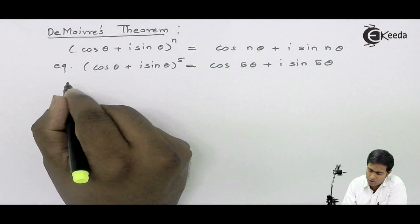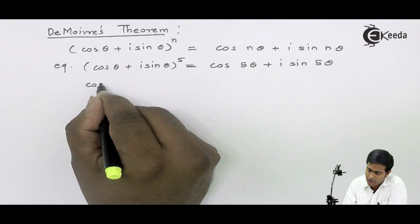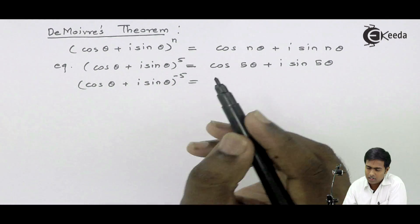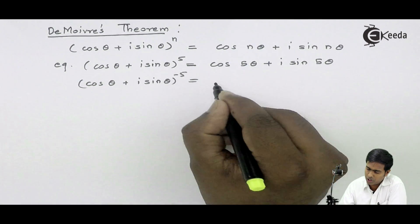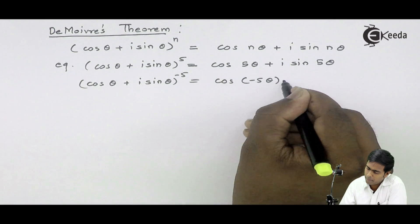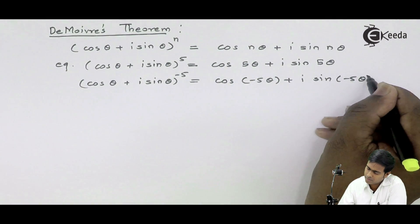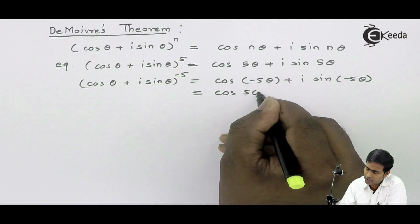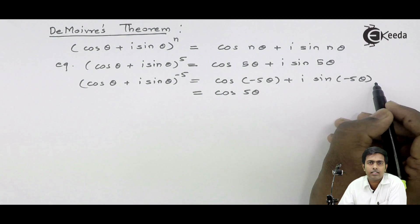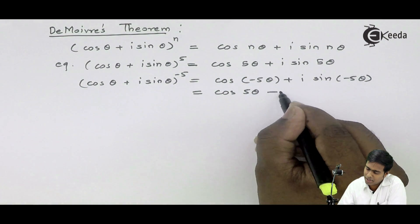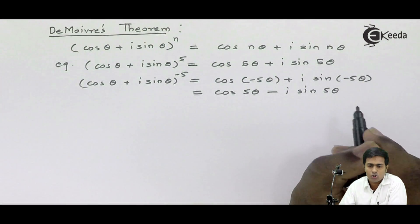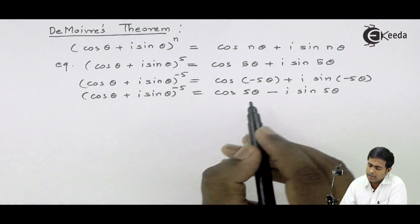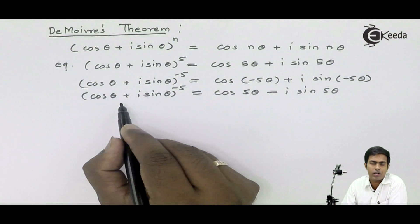Suppose it is (cos θ + i sin θ) raised to -5. Then what will happen? Same reasoning—this -5 will multiply the amplitude of the complex number, so it will become cos(-5θ) + i sin(-5θ). Now we all know that cos(-θ) = cos θ, hence cos(-5θ) = cos(5θ). Similarly, sin(-5θ) = -sin(5θ), so it will become -i sin(5θ). So if you want to find out the negative power of any complex number, the sine term will become negative. Vice versa is also true.